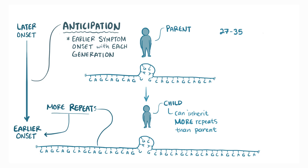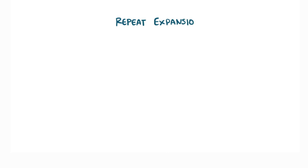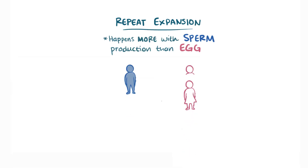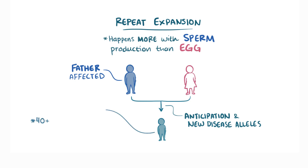Even repeats of 27-35 CAGs can expand occasionally, and these are called pre-mutation alleles, since they don't cause the disease, but they're set up for developing a mutation of 36 or more CAGs. This process of adding more repeats is called repeat expansion, and it happens way more in the production of sperm than of eggs. So, both anticipation and new disease alleles generally happen when the father is the affected parent. When a person has 40-plus repeats, they show 100% penetrance, and they will have the disease.